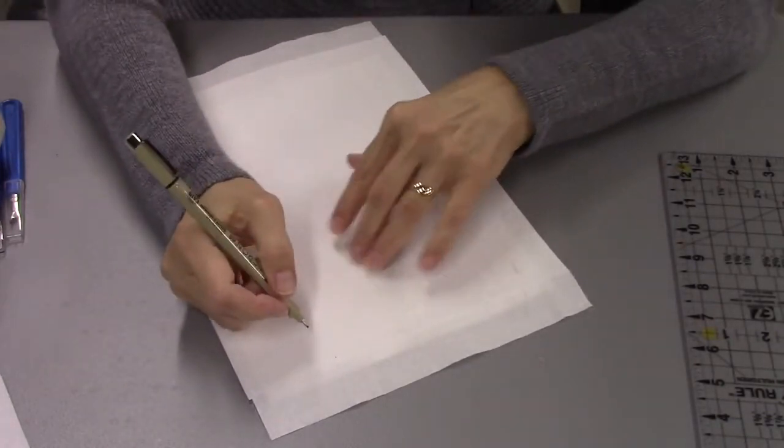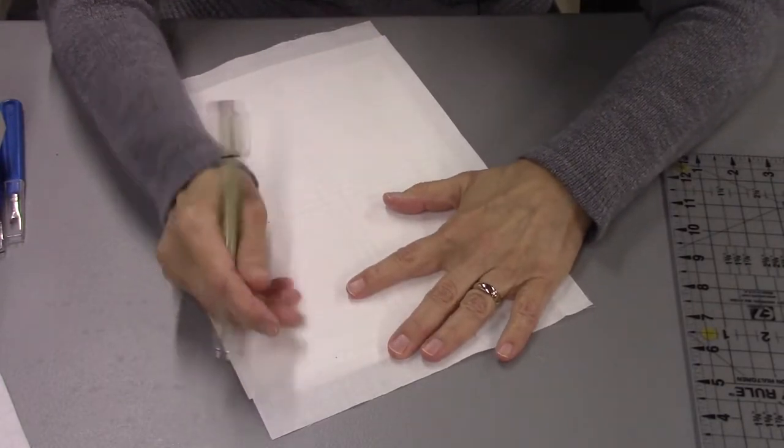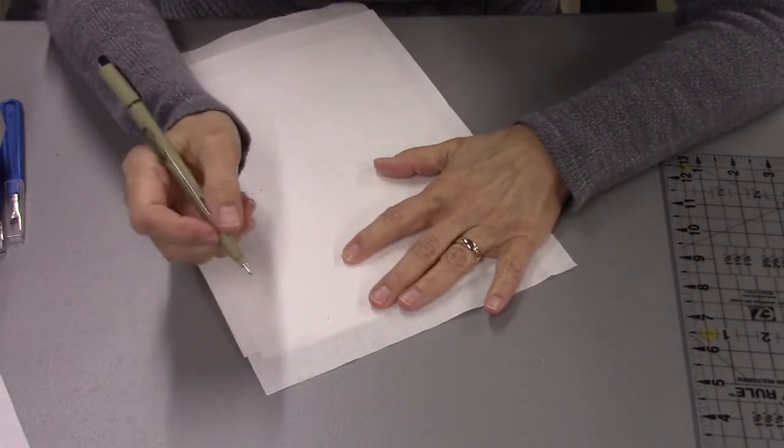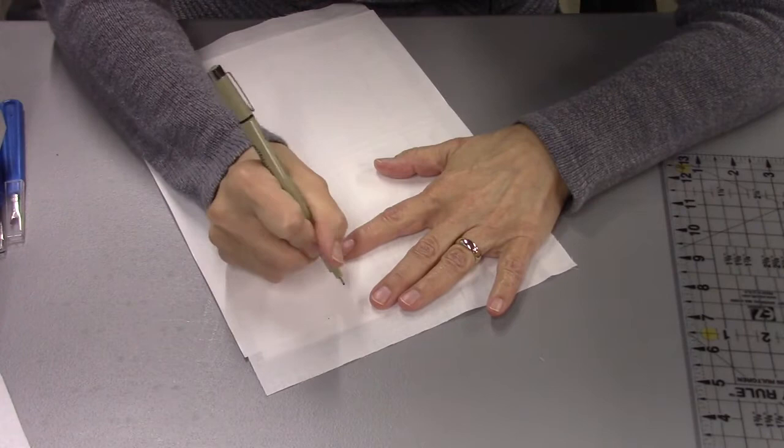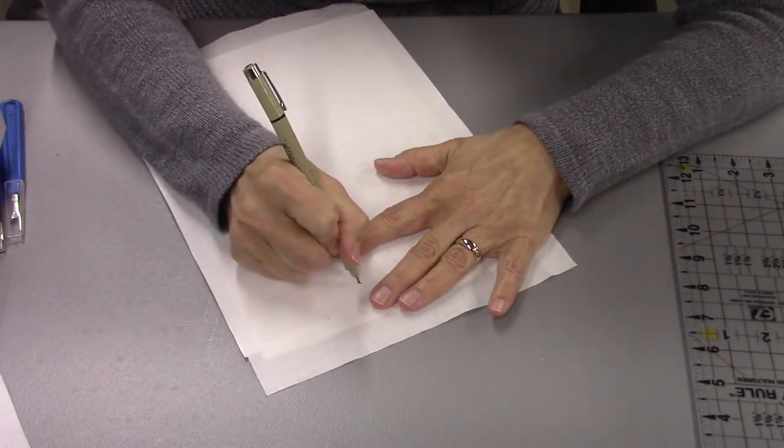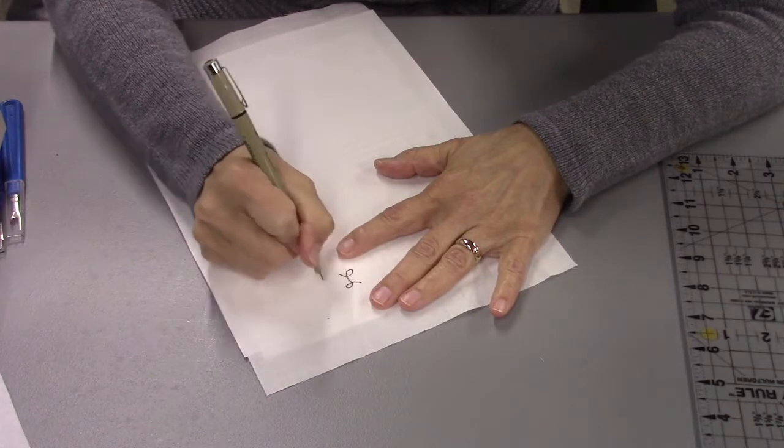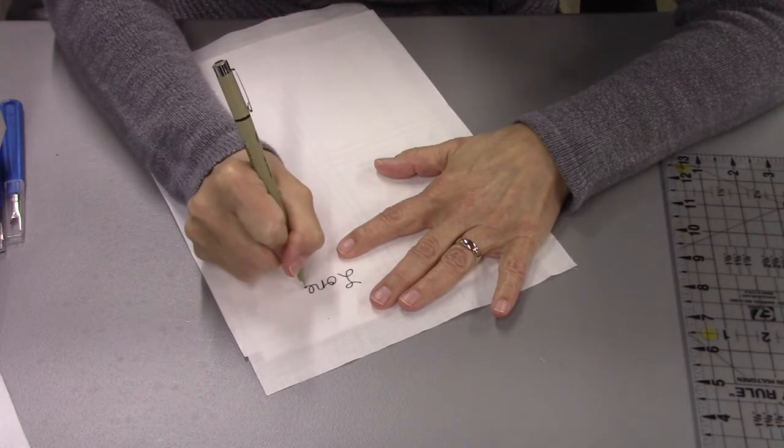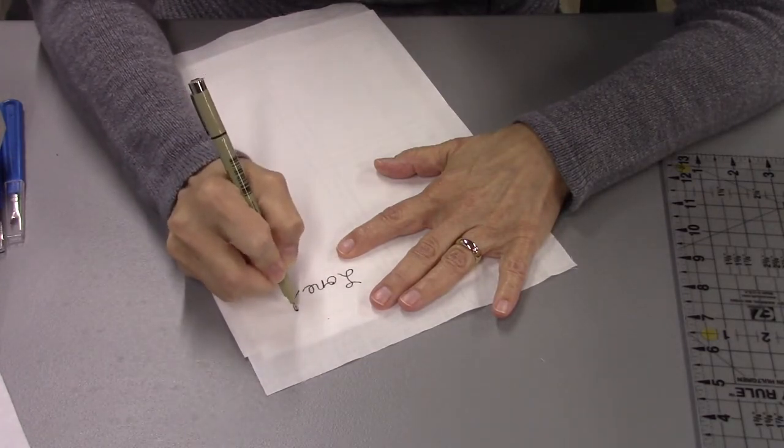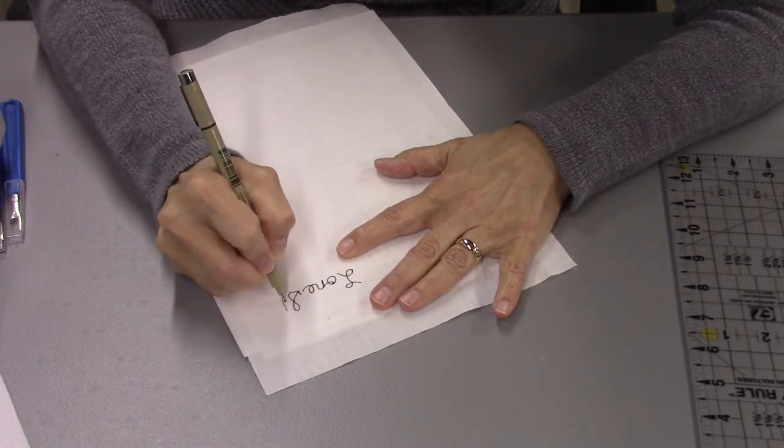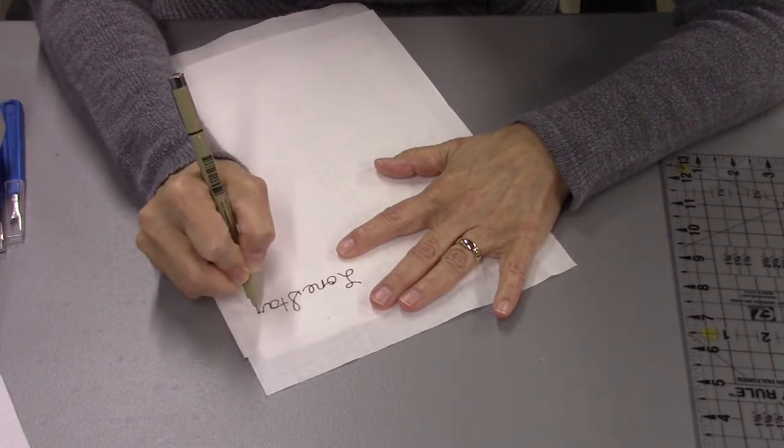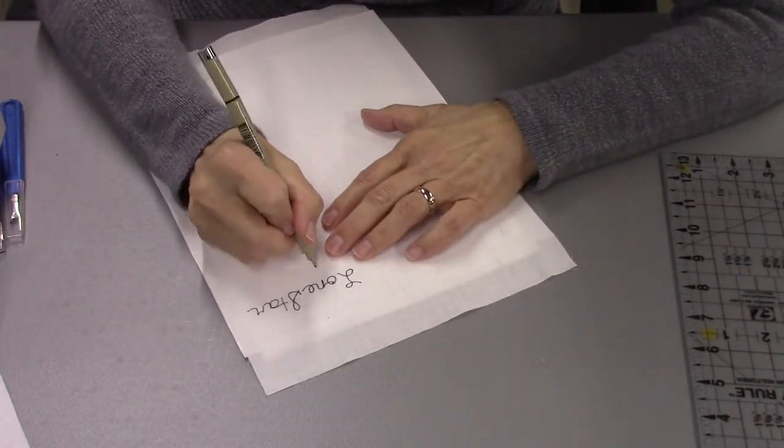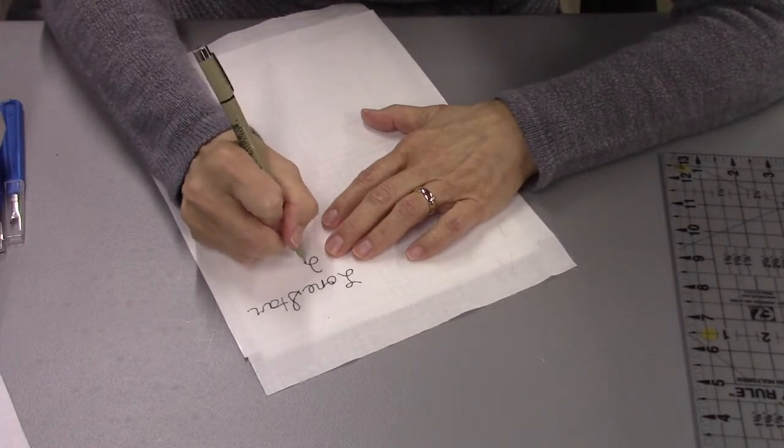Then I can write the information I want on my label. Okay, so I need a label for my Lone Star quilt. You can print it or you can write it. Just take your time. So there's my Lone Star, and I finished it in 2020. I'm using two lines.